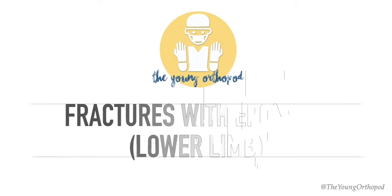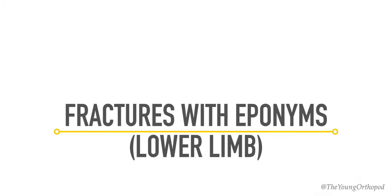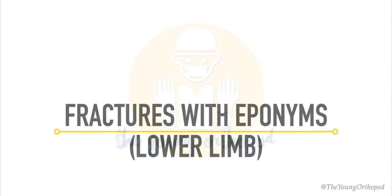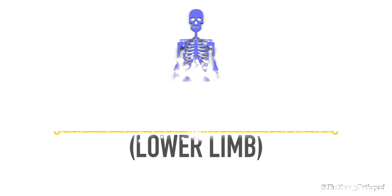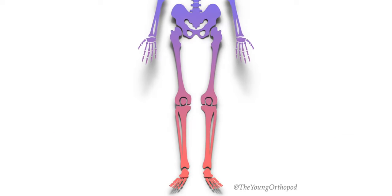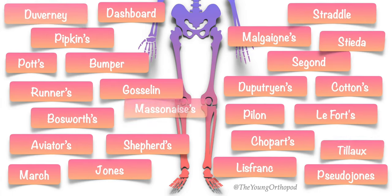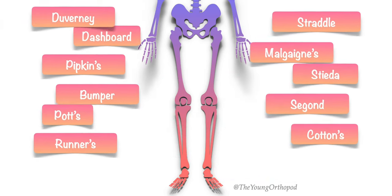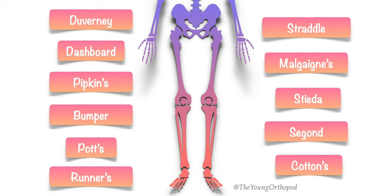Hello and welcome to the Young Author Pod. Today we will discuss the lower limb fractures with eponyms. Eponymous fractures, or named fractures, are frequently asked in exams. There are at least 25 eponymous fractures of the lower limb including the pelvic girdle. We have divided these into two videos, and in this one we are going to discuss a few of these, with the remaining in the next part.